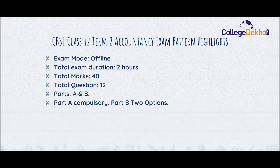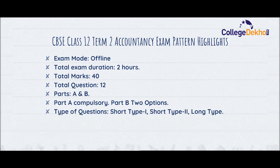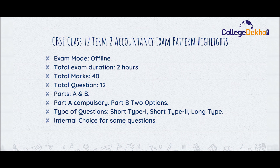Part A will be compulsory for all students, and Part B will have two different options. The type of questions asked in the exam will be Short Answer Type 1, Short Answer Type 2, and Long Answer Type. There will also be some internal choices for some of the questions, meaning candidates will have to choose alternate choices for specific questions where internal choices are available.